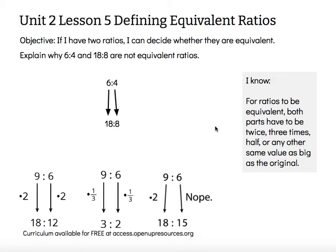All right, so we have 6 to 4 and 18 to 8, so I'm just going to do that same process. I'm going to think to myself, 6 times what gives me 18? Well, I could triple 6 to get 18, but if I tripled 4, 4 times 3 would give me 12.